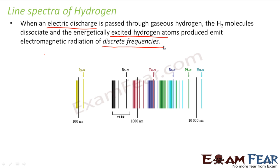Emission spectra are obtained only when you supply some external energy. Whenever external energy is supplied, the atoms go to the excited state. Once the atoms go to the excited state, they emit electromagnetic radiation of discrete frequencies. These radiations together form the line spectra or the emission line spectra. In case of hydrogen, with the help of the electric discharge, we get the line spectra. The line spectra shows different series of lines seen in the spectrum of hydrogen.